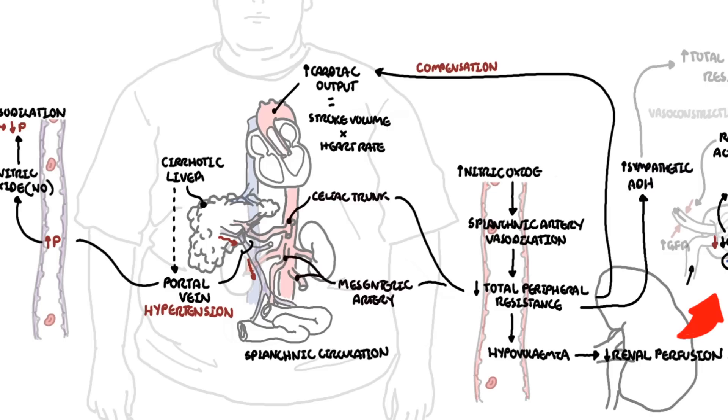The importance of splanchnic vasodilation in hepatorenal pathophysiology can be indirectly illustrated by the response to ornipressin, an analogue of antidiuretic hormone. This antidiuretic hormone analogue is a preferential splanchnic vasoconstrictor.